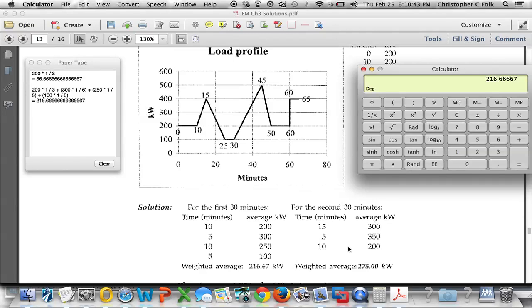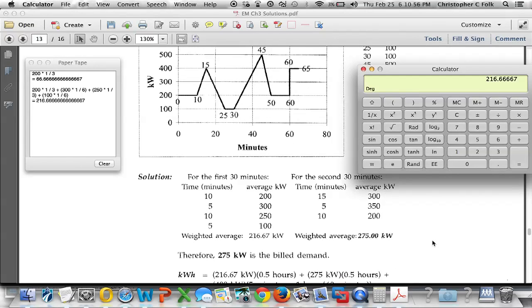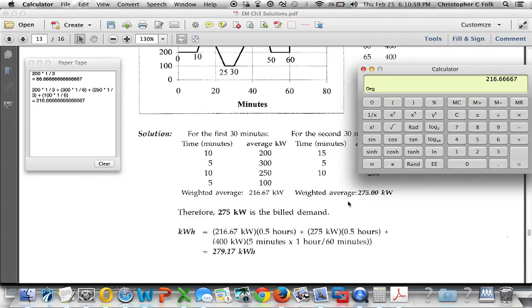You'll have to do the same thing over here for the second 30 minutes to come up with 275. It'll work just fine. Now, towards the bottom here, that's the first part here is you'll come up with a 275. So whichever this is higher, the utility company is what we're going to be charged for as our demand. So there's our demand.